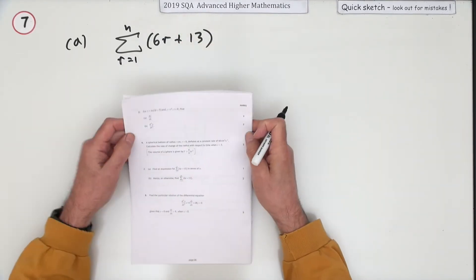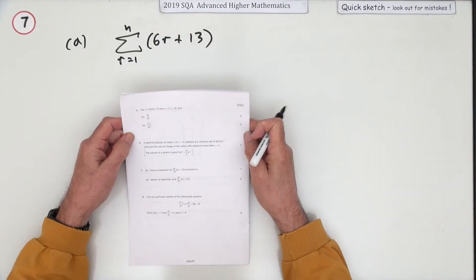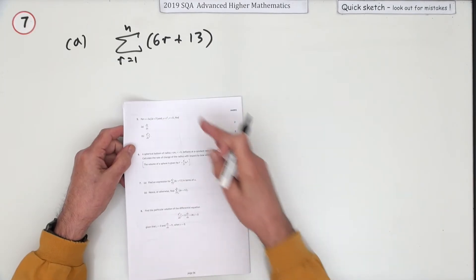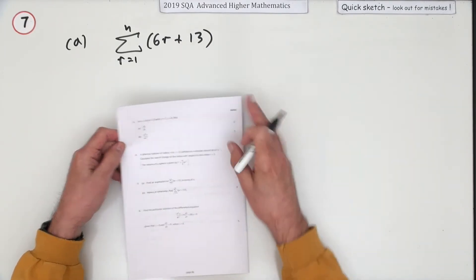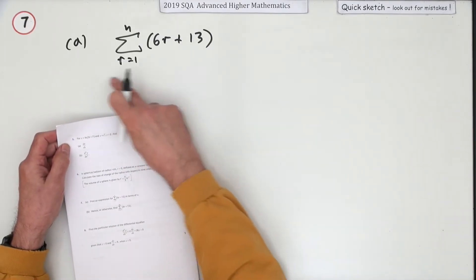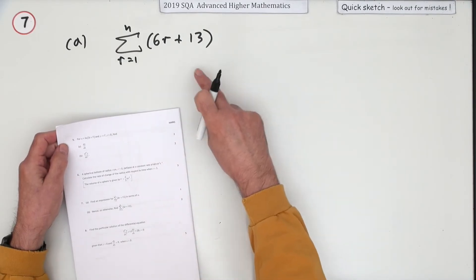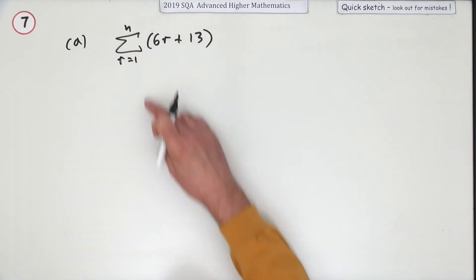Number seven from the 2019 Advanced Higher Maths summation formulae. Used to have to learn them but you've got them at the front now. For one mark, find an expression for this in terms of n, the sum from one to n.